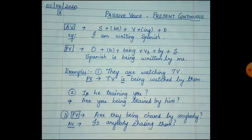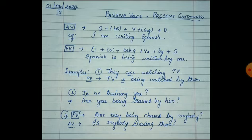Now let's convert a passive voice sentence into active voice. 'Are they being chased by anybody?' Here 'they' is the object, 'chased' is the verb, and 'anybody' is the subject. To convert to active voice, we bring 'anybody' to the subject's place: 'Is anybody chasing them?' 'Being chased' has become 'chasing' in active voice. So 'Is anybody chasing them?' is the active voice version.